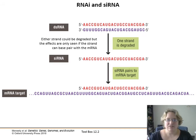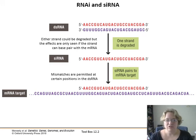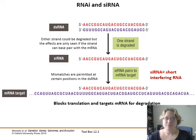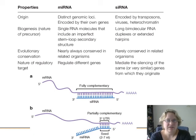The next piece is RNA interference and siRNA — short interfering RNA — which is different from microRNA. With double-stranded RNA, either strand could be degraded, but we only see the effects if the strand can base pair with the messenger RNA. Mismatches are permitted; it doesn't have to be exact. The siRNA has a similar reaction to microRNA — it blocks translation and targets mRNA for destruction. MicroRNAs and short interfering RNAs both end up targeting mRNAs for either degradation or blocking translation, but they're slightly different.